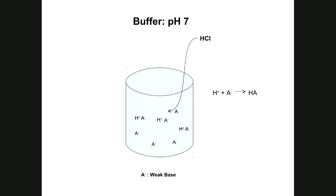For example, a buffer solution at pH 7 contains a ratio of weak acid and weak base that maintains pH 7. If HCl is added, it undergoes ionization releasing protons, but the weak base component of the buffer — denoted with a negative charge — reacts with those protons, neutralizing them and preventing the proton concentration from increasing, so the pH stays at 7.